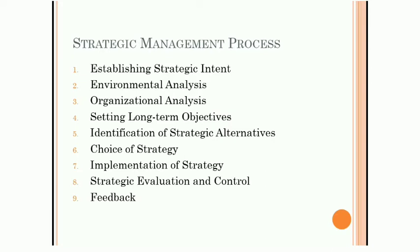Basically, the strategic management process consists of mainly eight steps, plus a ninth feedback step. The feedback step is required to check whether strategies are implemented effectively or not, as well as whether the results that managers desire are obtained or not.